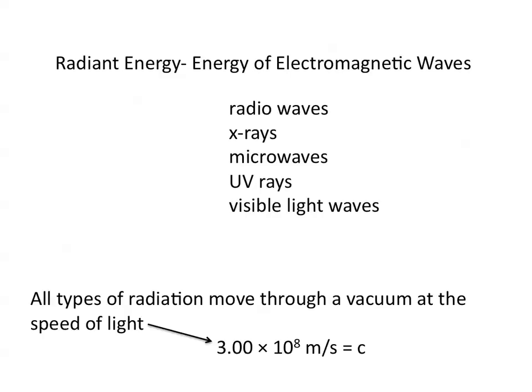All types of radiation move through a vacuum at the speed of light, which is 3 times 10 to the 8th meters per second. This is a constant and is given the symbol C.